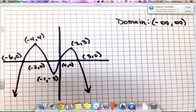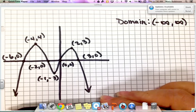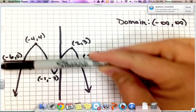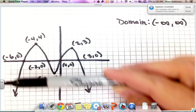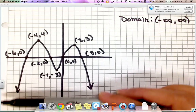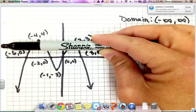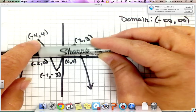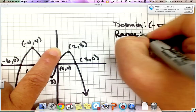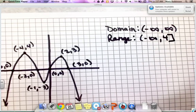Next, consider the range — the set of all possible y-values on your function. Think: does my graph go up and down forever? It does go down forever, but it doesn't go up forever. You always want to state it from your lowest y to your highest y. Since it goes down forever, we use negative infinity. Moving up the function, the highest y-value is 4. So our range is negative infinity to 4, inclusive, written with a bracket.